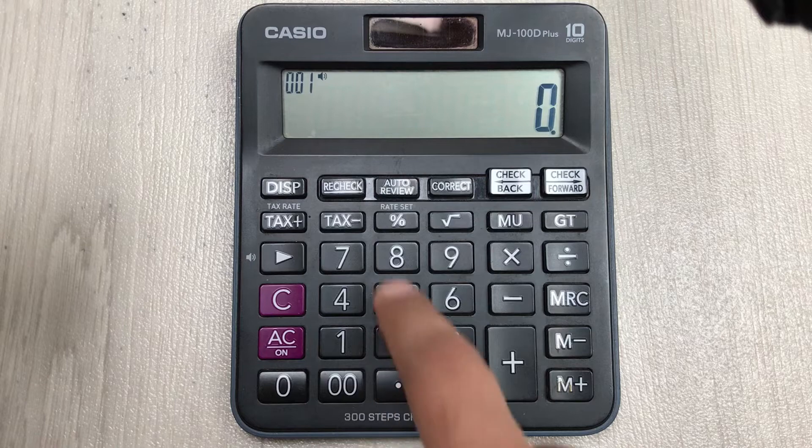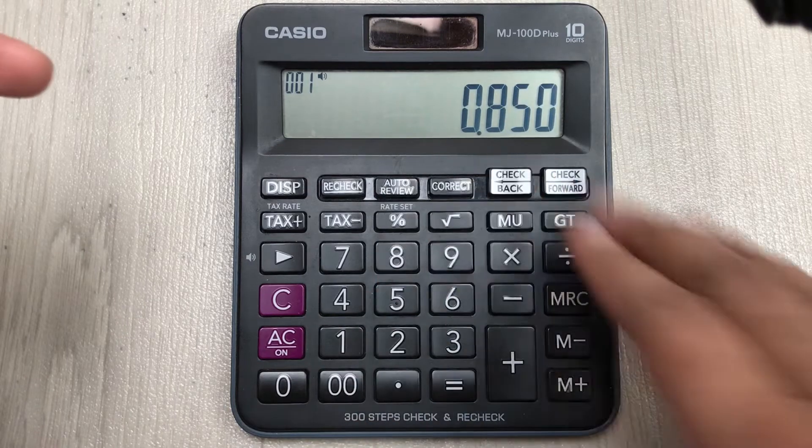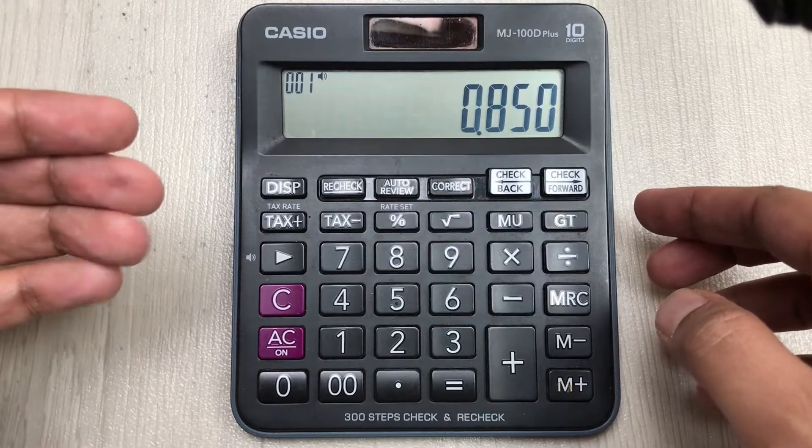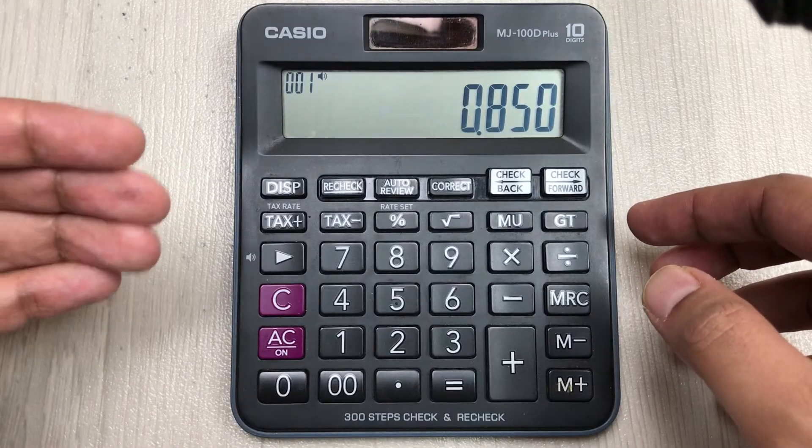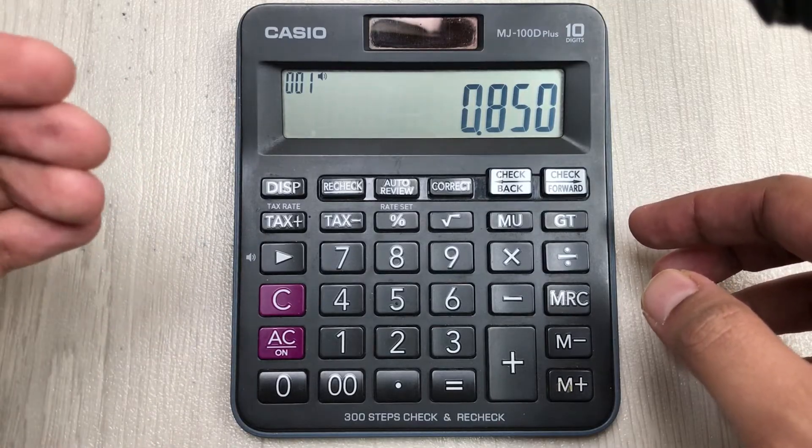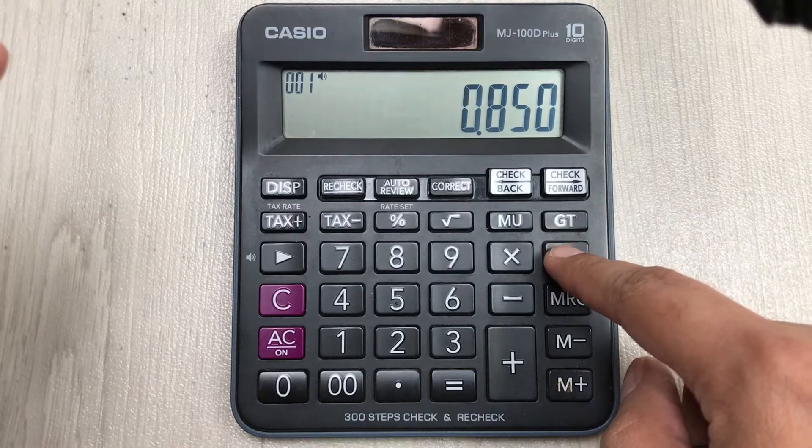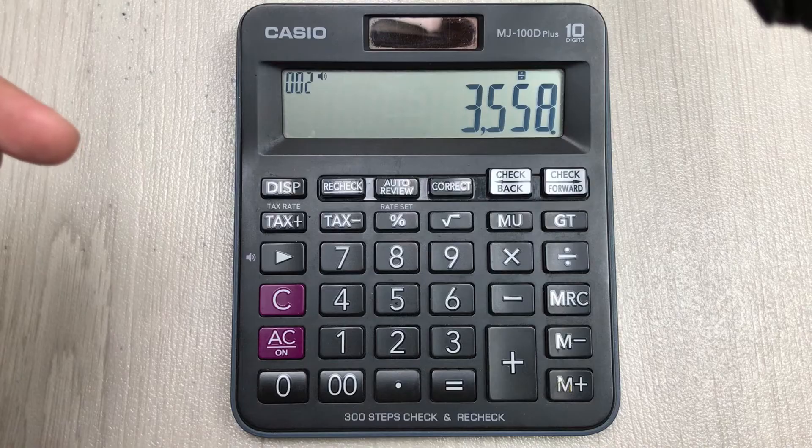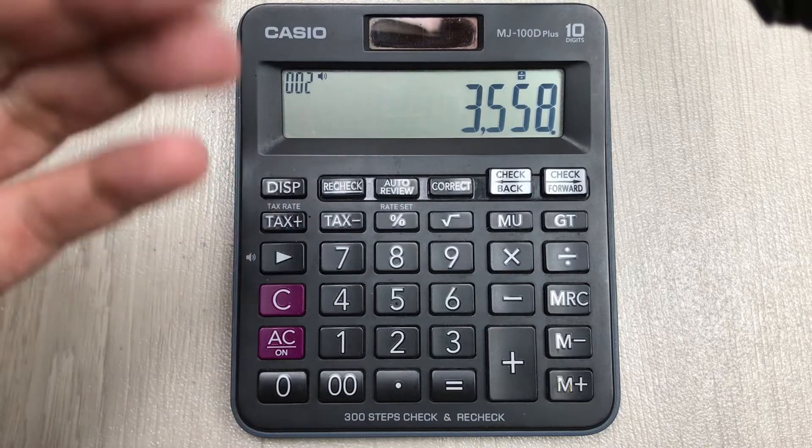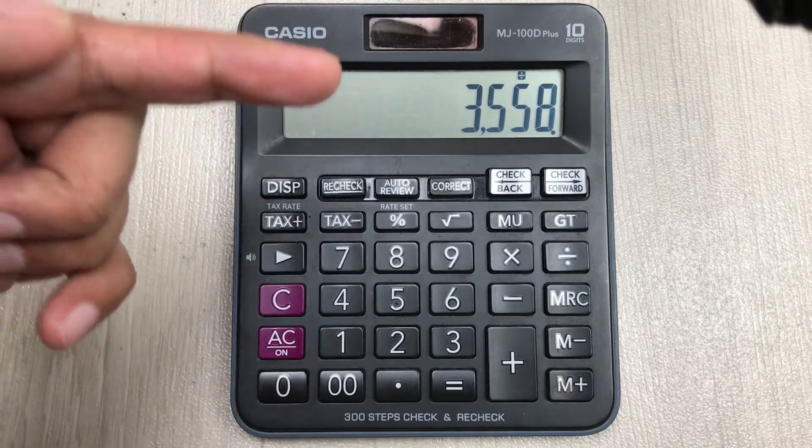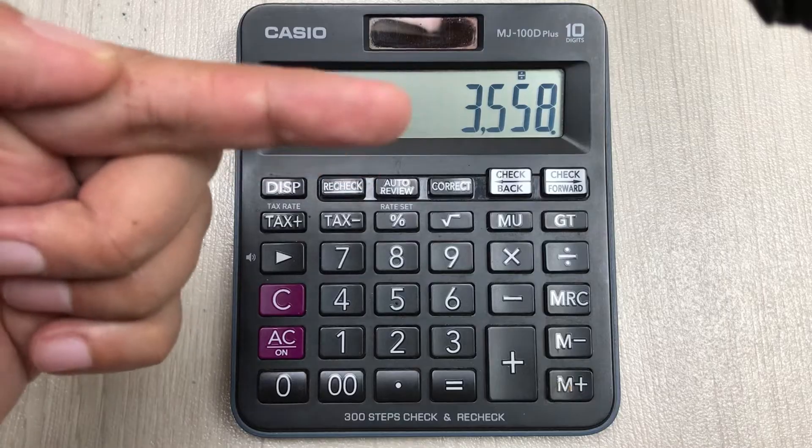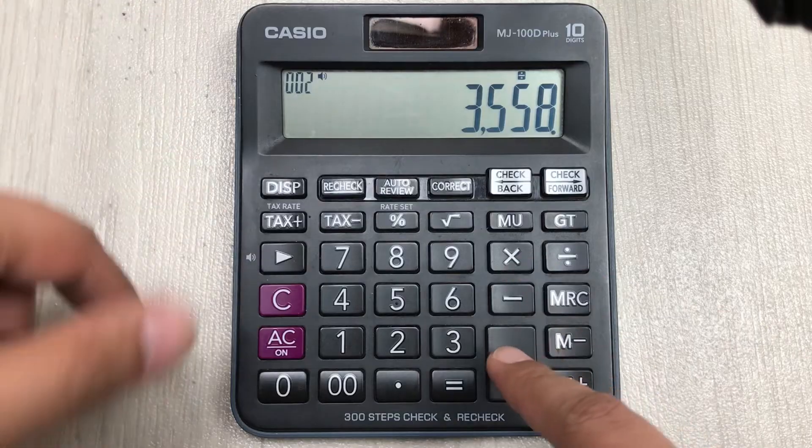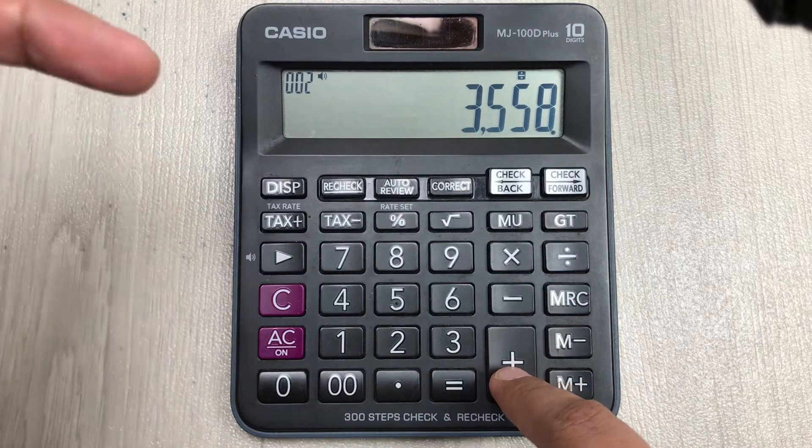In the second step we have to divide it with 3558. This is the second method and in this method you have to remember this number to get your correct answer. Now in the third step we add 1, so plus 1.